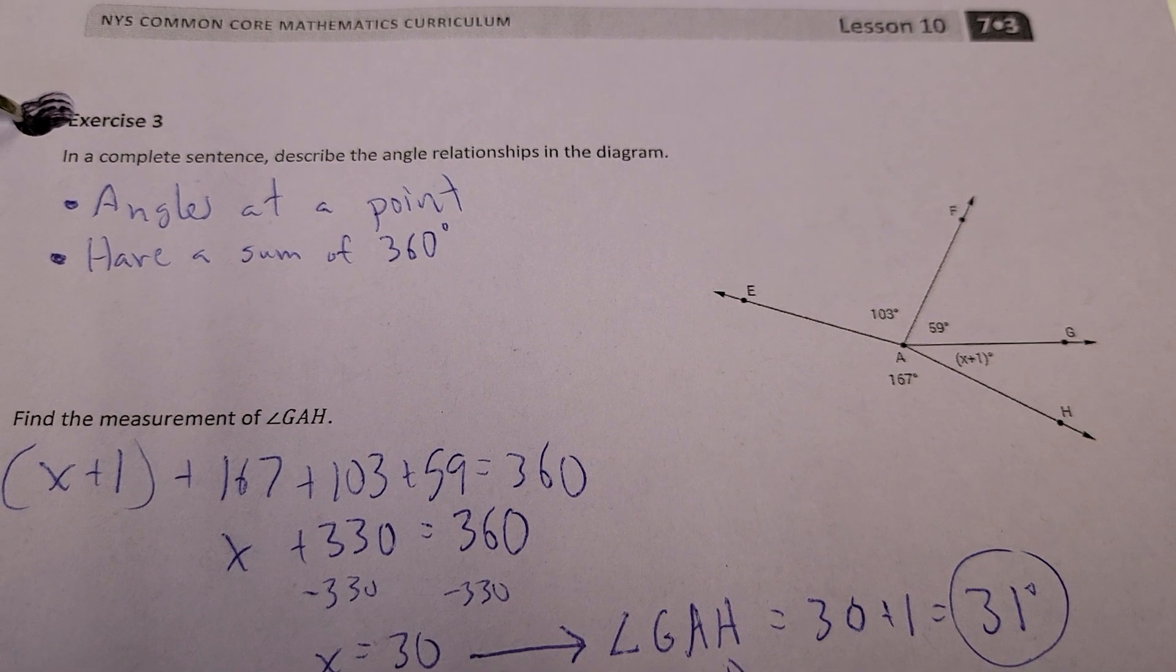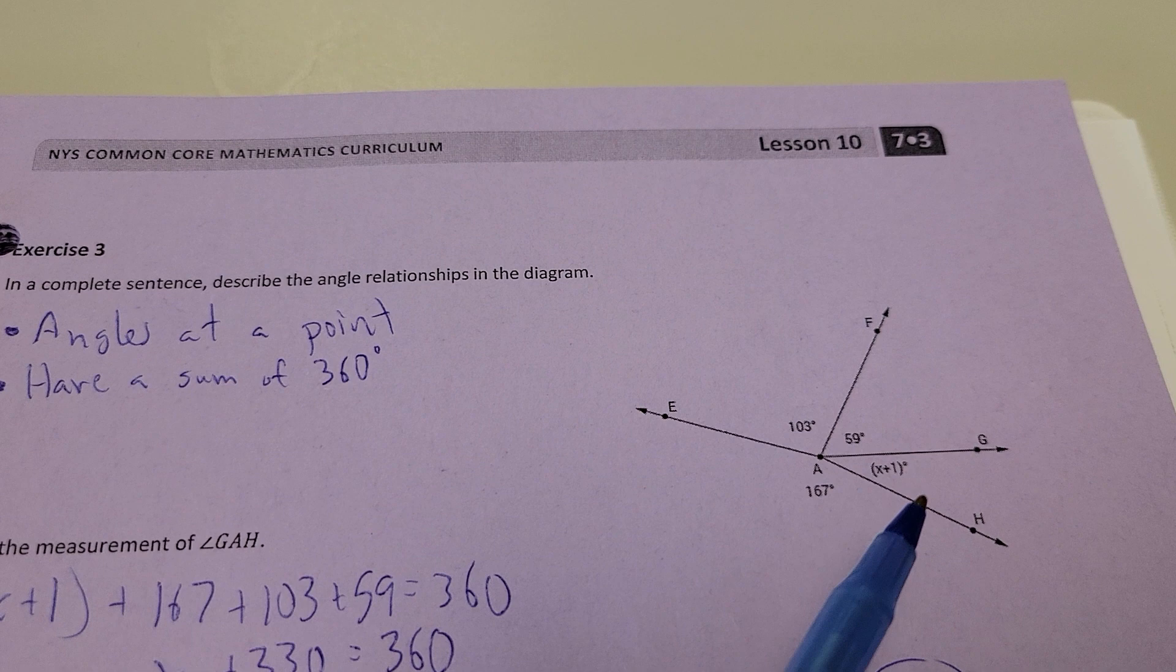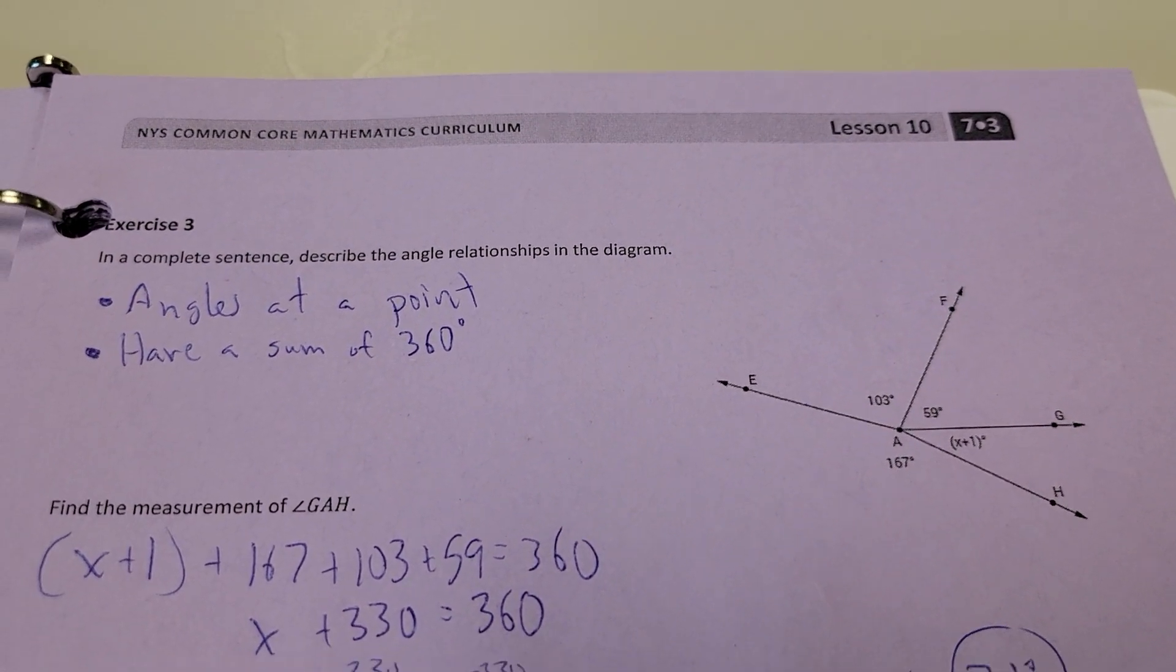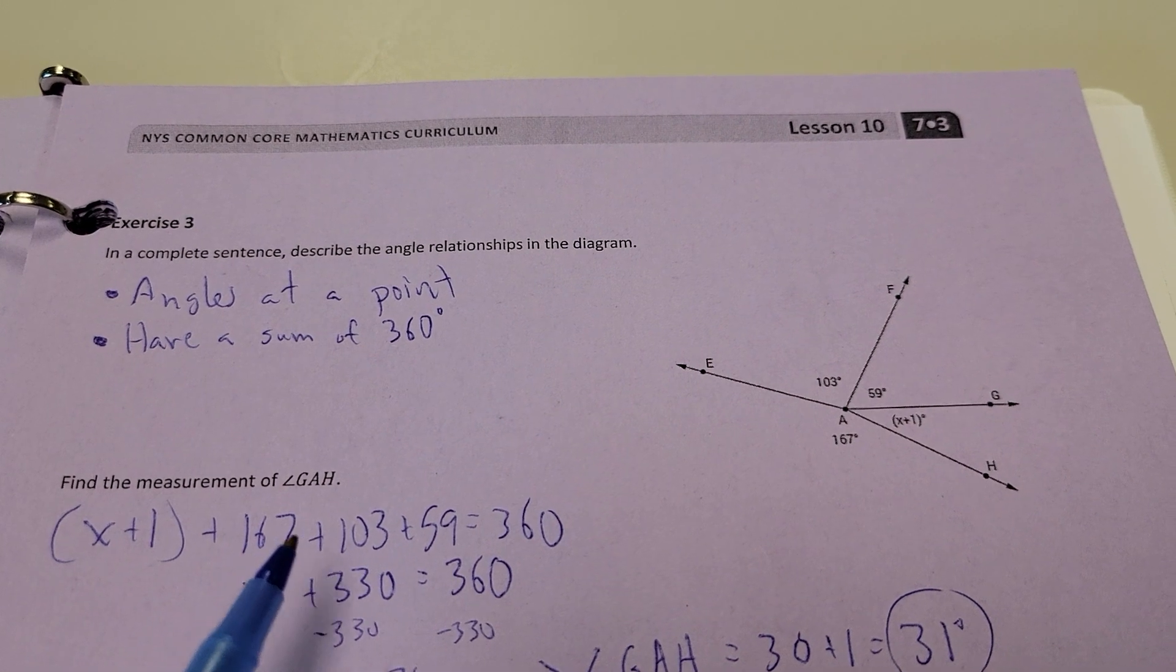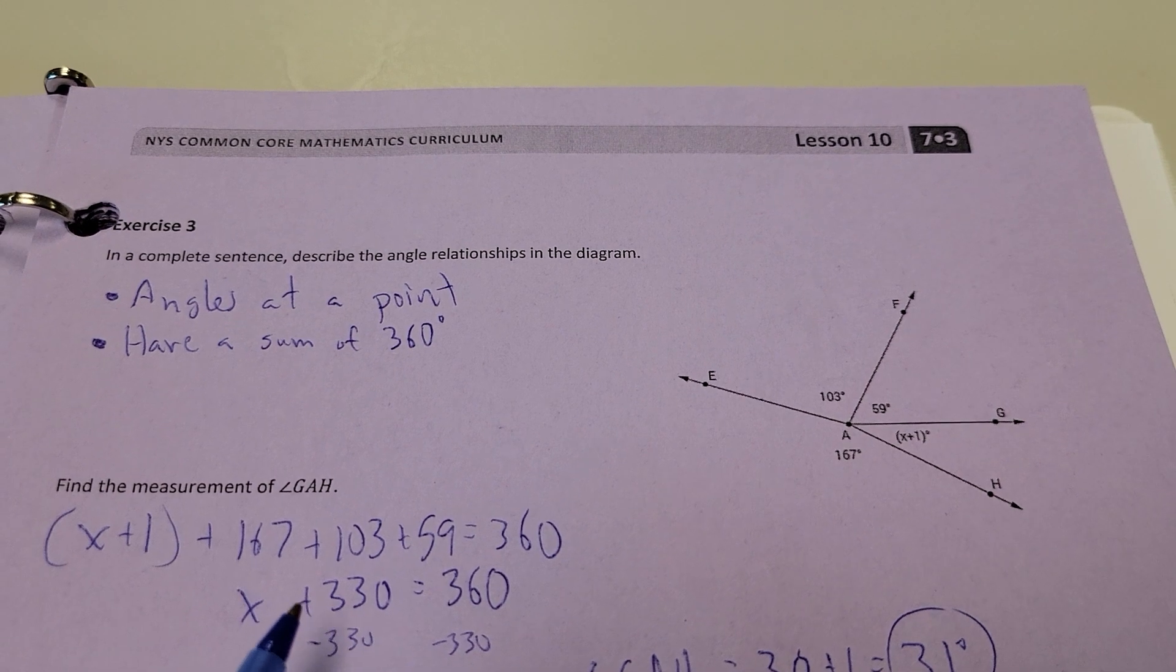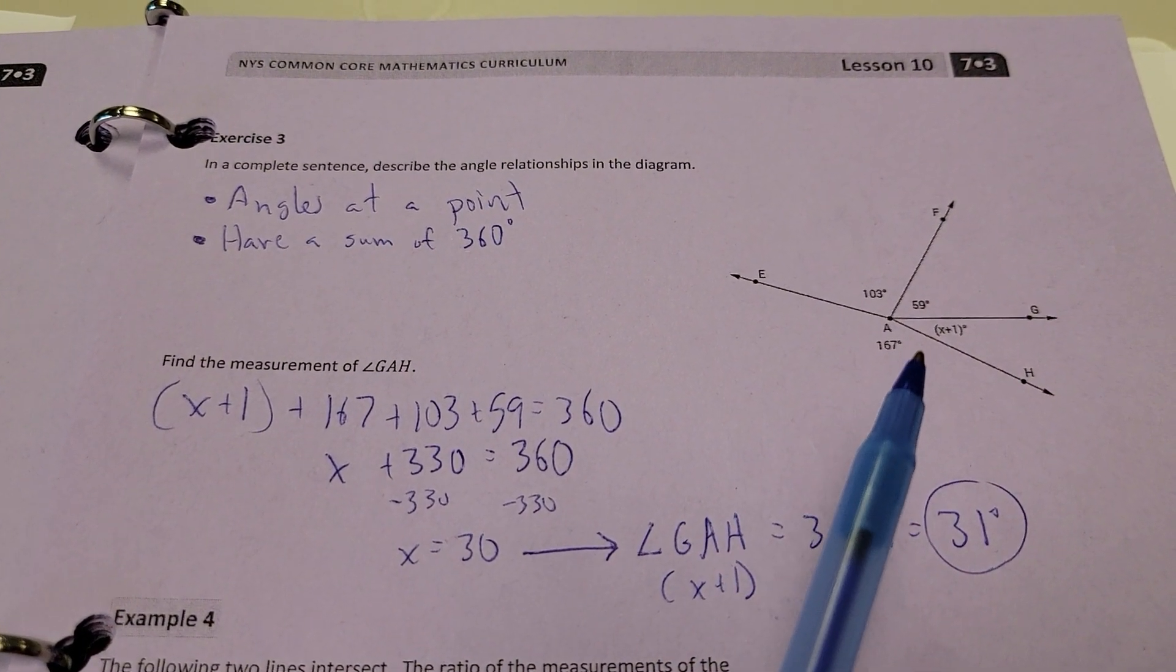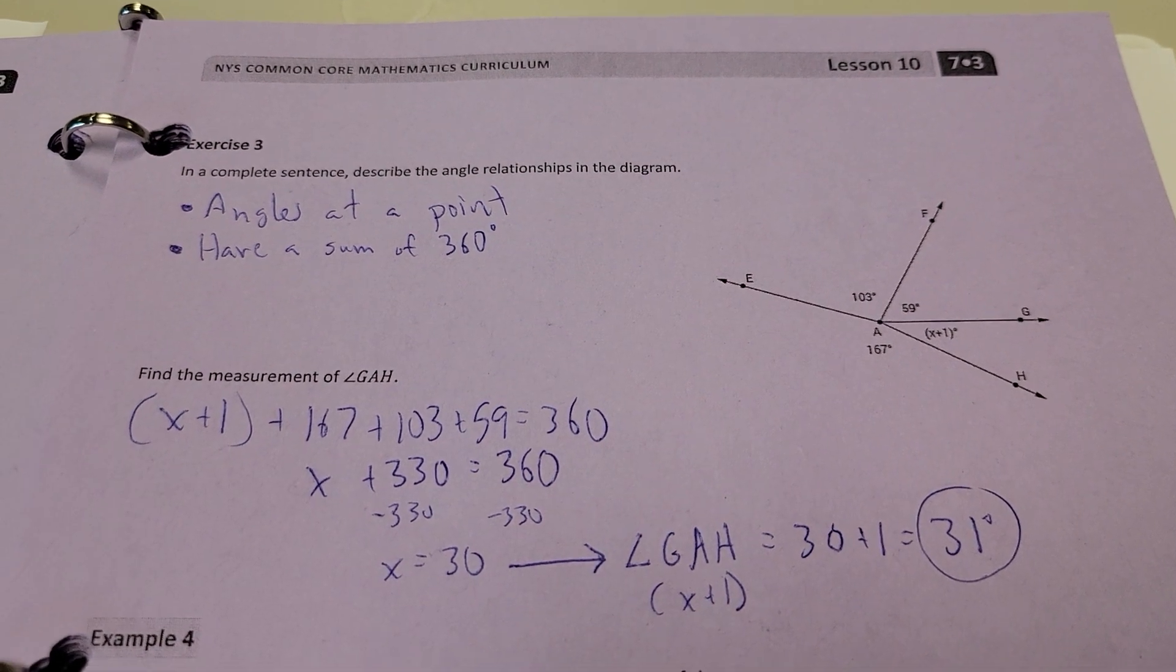Next up, we got angles at a point here, because I know this one, I know this one, I know this one. I don't know what X plus 1 is right here. So, the angle GAH or HAG, whatever you want to refer to it as. Alright, so, all together, X plus 1, and then the 167, 103, and 59, giving me 360. I'll add up my 1, and then the other three numbers to get 330. Take my 330 away from each side, and I get X equals 30. However, don't forget, 30 was not where I finished, because I'm looking for X plus 1. So, the measure of that angle is 30 plus 1, which is 31.